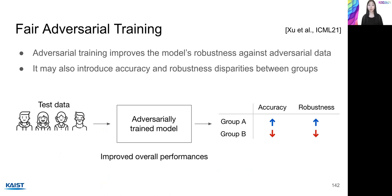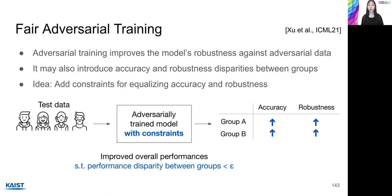The last paper in this direction is about adversarial training. Many works have used adversarial training to improve the model's robustness against adversarial data. However, similar to the previous two scenarios, adversarial training may also introduce accuracy and robustness disparities between groups. This paper shows that such disparity occurs since adversarial training has a tendency to favor the groups that are easier to predict. To reduce such unfairness, the paper suggests adding constraints to equalize model performances among groups, so the trained model has more uniform performances across groups.